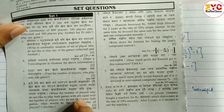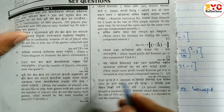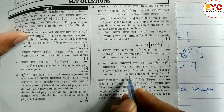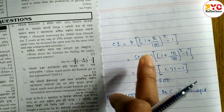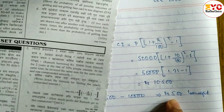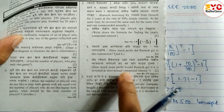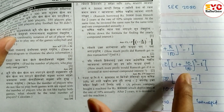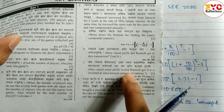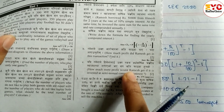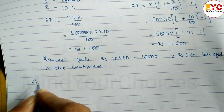Now question C: How much more profit would Ramesh get if it is invested at semi-annual compound interest? We have to find out the semi-annual compound interest for number C.